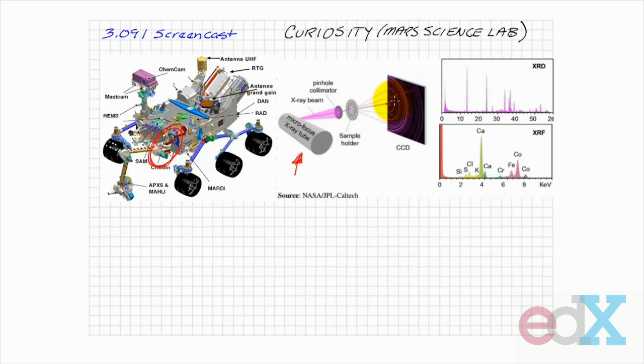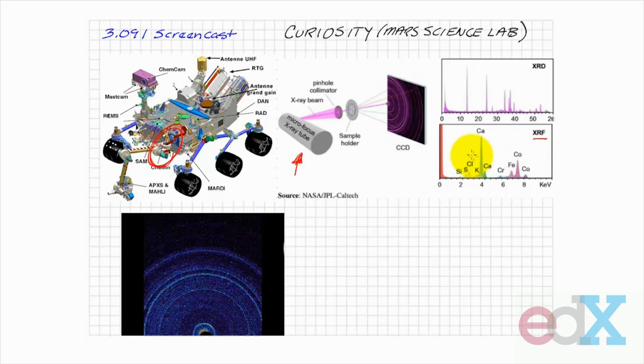The diffracted photons impinge on a phosphor-type screen that's embedded in a CCD array. Shown in this image is the first diffraction image obtained by Curiosity from the surface of Mars.